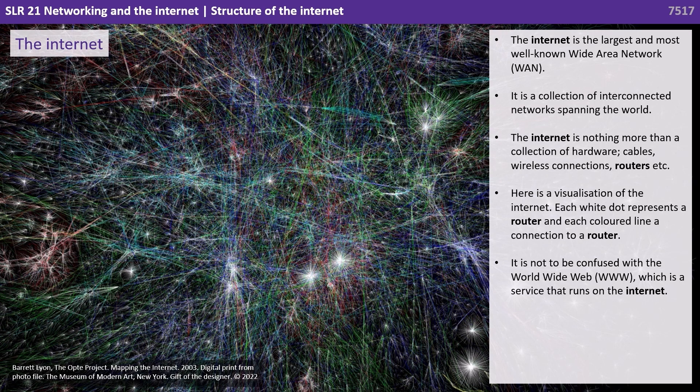The internet is the largest and most well-known wide area network, or WAN. It is a collection of interconnected networks spanning the world. The internet is nothing more than a collection of hardware, cables, wireless connections, and routers.